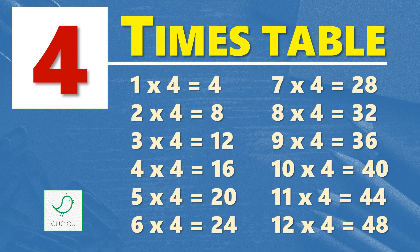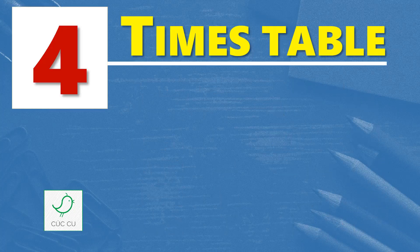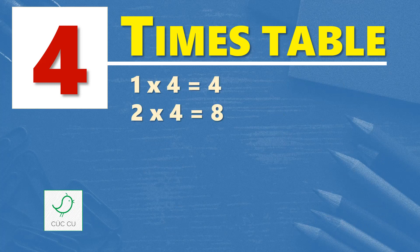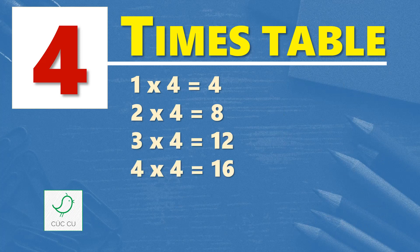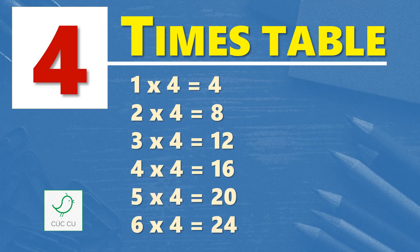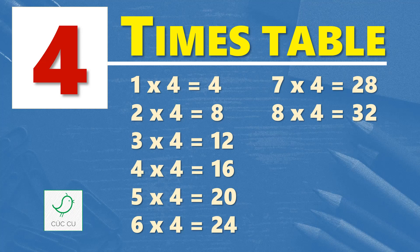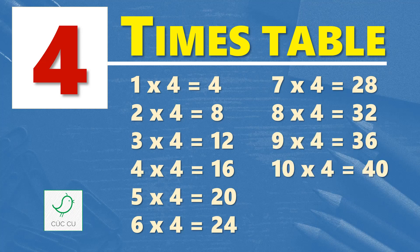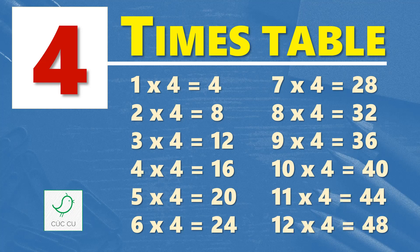Multiplication table of four. Four times table. One times four is four, two times four is eight, three times four is twelve, four times four is sixteen, five times four is twenty, six times four is twenty-four, seven times four is twenty-eight, eight times four is thirty-two, nine times four is thirty-six, ten times four is forty, eleven times four is forty-four, twelve times four is forty-eight.